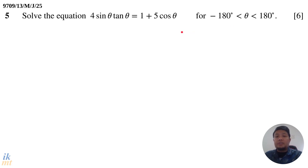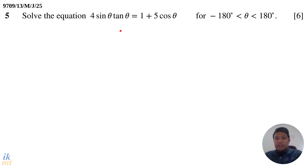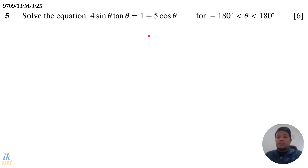As I usually tell my students, whenever you are going to solve a trigonometric equation, your aim is to apply either identities or algebraic manipulation in order to get to the endgame. The endgame is a single trigonometric function on one side of the equal sign and then a number on the other side. That's the aim: single trigonometric function equals a number.